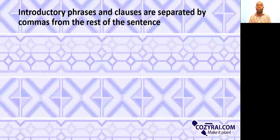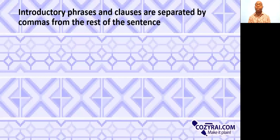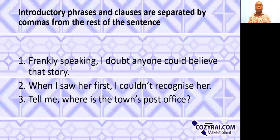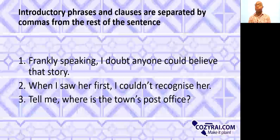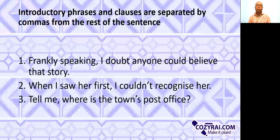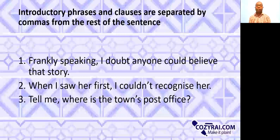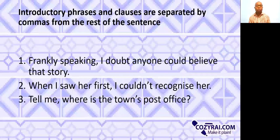We also have introductory phrases and clauses, which are supposed to be separated by commas from the rest of the sentence. Example one: 'Frankly speaking, I doubt anyone could believe that story.' So 'frankly speaking' is an introductory phrase. Example two: 'When I saw her first, I couldn't recognize her.' 'When I saw her first' is an introductory clause and therefore is separated from the rest of the sentence by a comma.